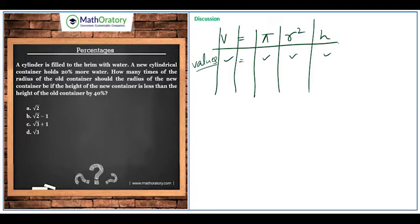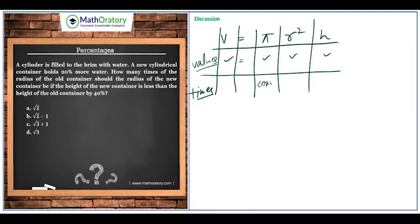The same relationship can also be used if we think of everything in terms of 'times.' If the volume is this many times the previous volume, the radius is this many times the previous radius, and the height is this many times the previous height, the same relationship holds. Because pi is constant, it is always one times itself, so it becomes irrelevant. Using this idea, let's solve the question.